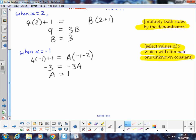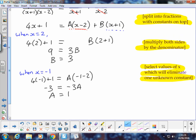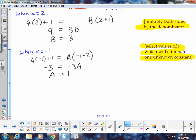So by carefully selecting values for x that suit us, we can in turn eliminate one of the constant terms A or B, and therefore, we've got our two constant values.